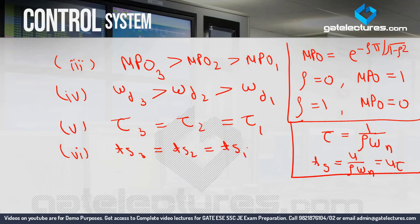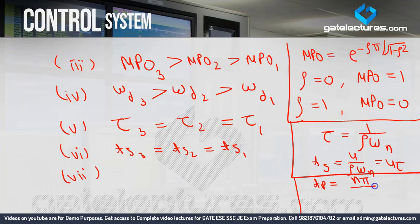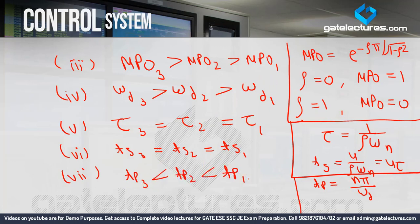The seventh conclusion is peak time. The peak time formula is n pi upon omega D. Since peak time is inversely proportional to omega D, and omega D3 > omega D2 > omega D1, we get: Tp3 is less than Tp2 is less than Tp1.